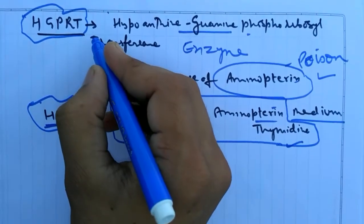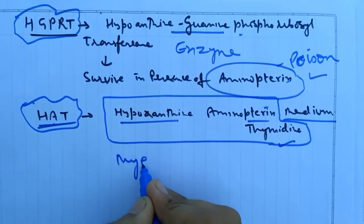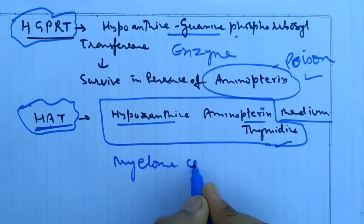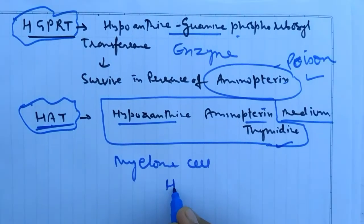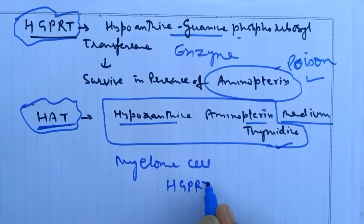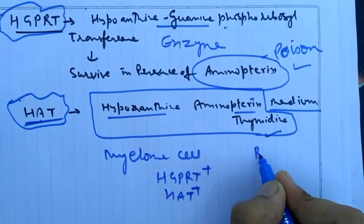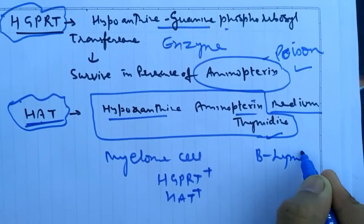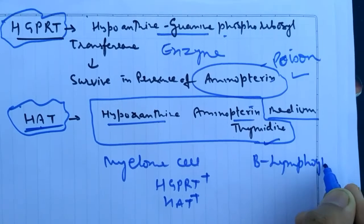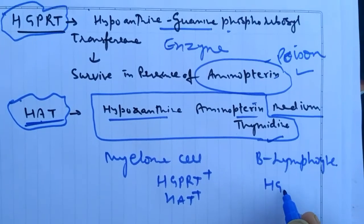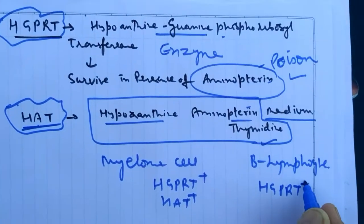And HAT is hypoxanthine aminopterin thymidine. It contains the aminopterin. So the myeloma cells fail to survive in condition of HGPRT and HAT. But B lymphocytes can grow in HGPRT and HAT.